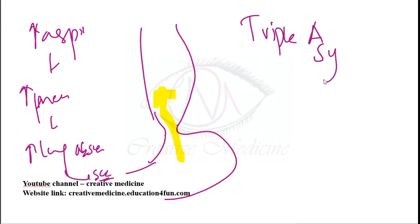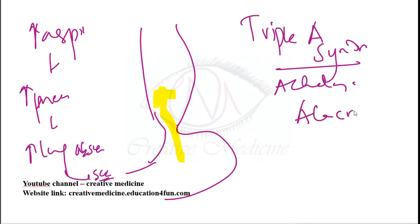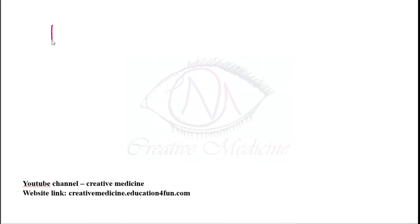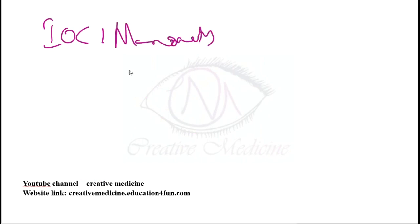AAA syndrome includes achalasia, alacrima, and ACTH-resistant adrenal insufficiency. Investigation of choice for achalasia is manometry.